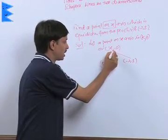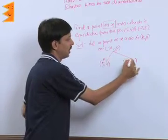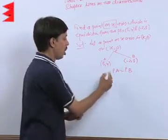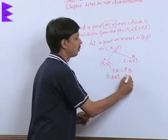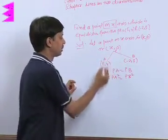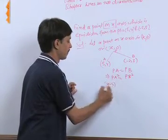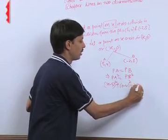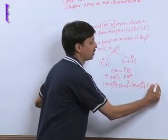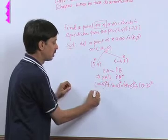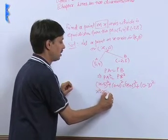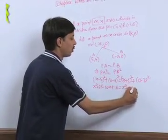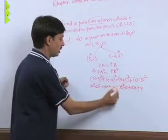Using the distance formula, let this point be P, and the two given points be A and B. Since PA = PB, we can write PA² = PB². So: (x − 5)² + (0 − 4)² = (x + 2)² + (0 − 3)². Expanding using (A − B)² = A² + B² − 2AB: x² − 10x + 25 + 16 = x² + 4x + 4 + 9. The x² terms cancel.